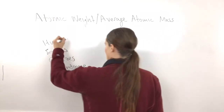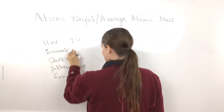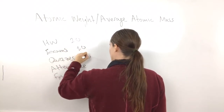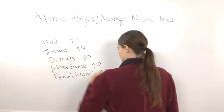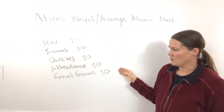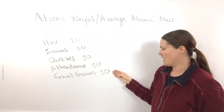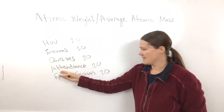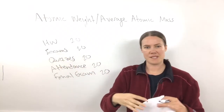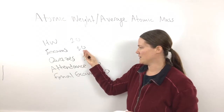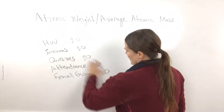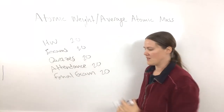Let's say all of these are worth twenty percent each to make it easy. The total percentage adds up to a hundred. In that case, all of your exams added together would equal twenty percent of your grade — they're all weighted the same.